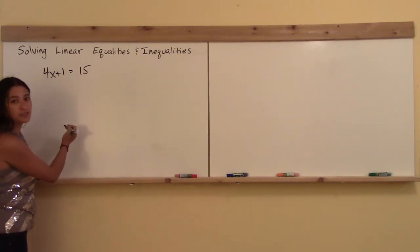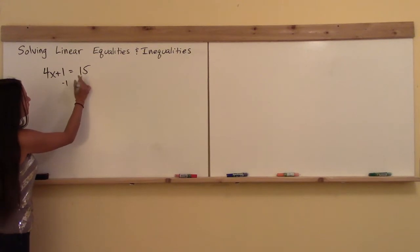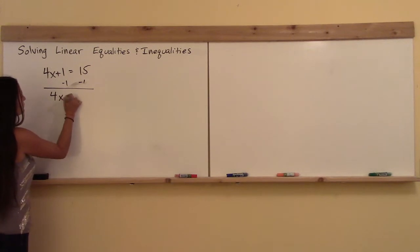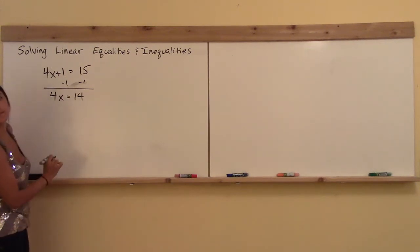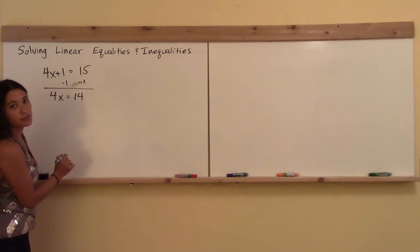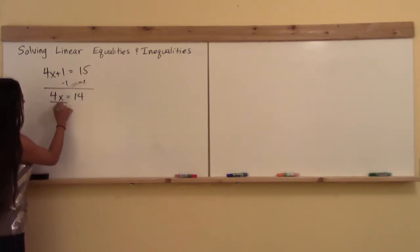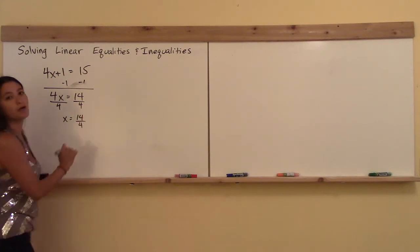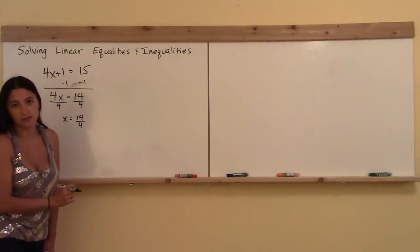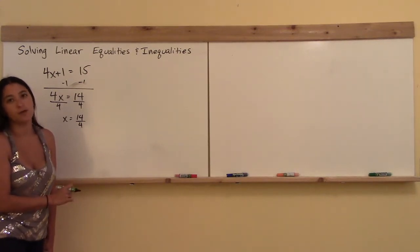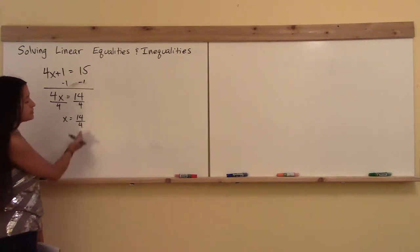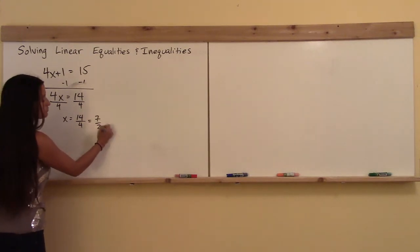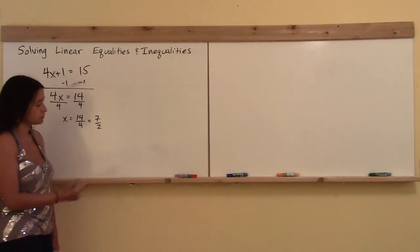To solve an equation like this, the first thing you want to do is subtract 1 from both sides. That brings you down to 4x is equal to 14. On the next step, you're going to divide both sides by 4. Then you get x equals 14 over 4. But when I ask you for an answer, I'll usually ask for it in a simplified or exact form. This is not simplified because there's a common factor of 2, so you're going to want to change that to 7 over 2. That's a simplified, exact form of the solution.